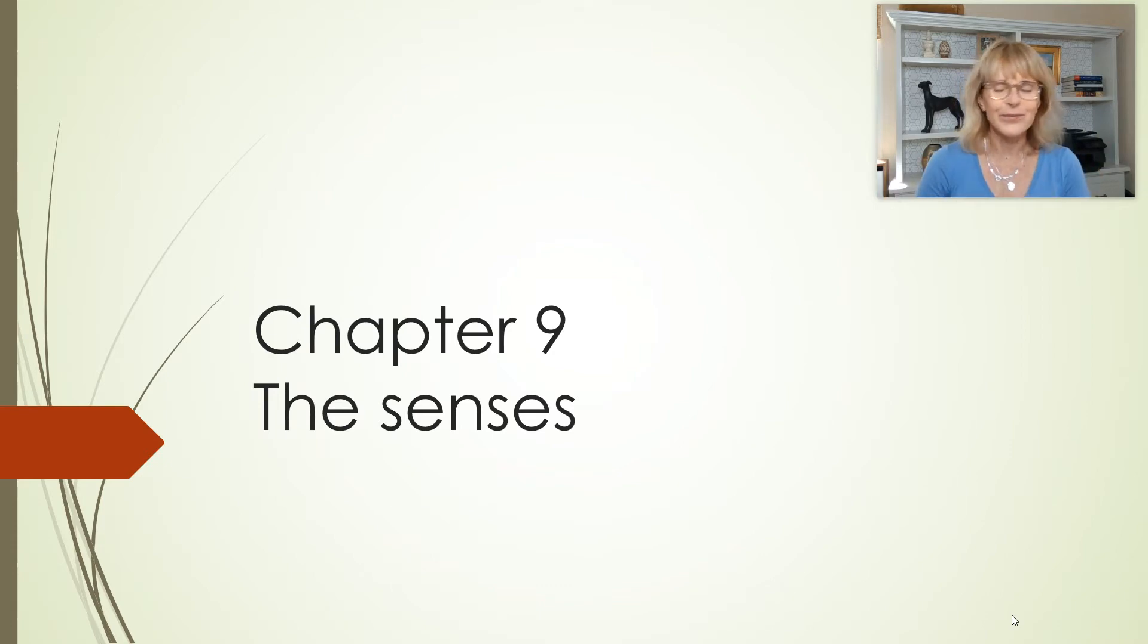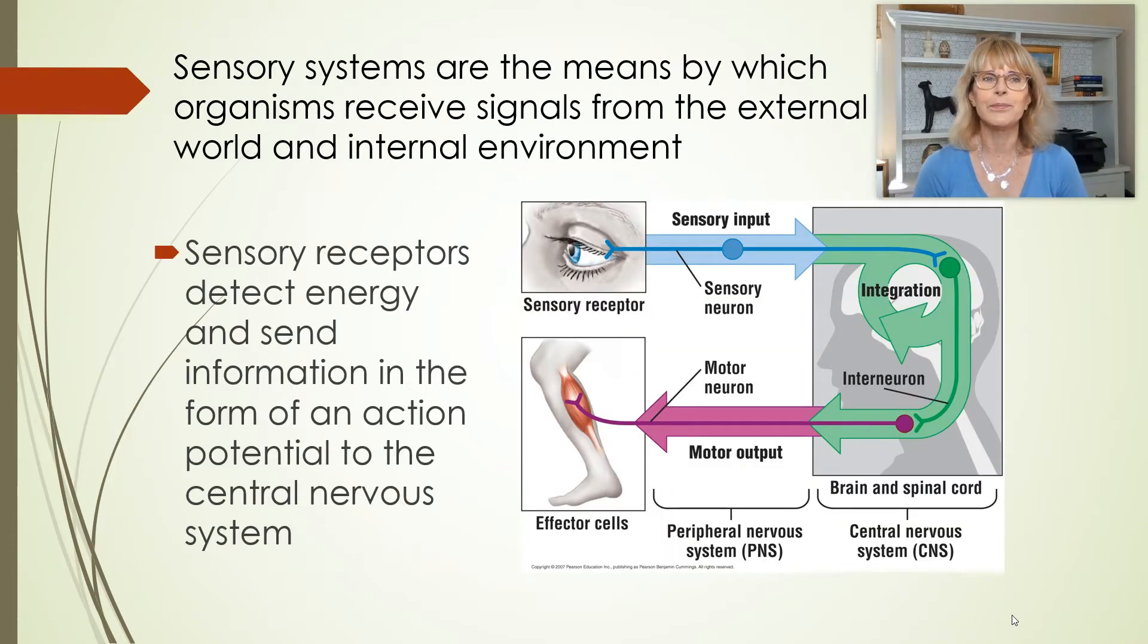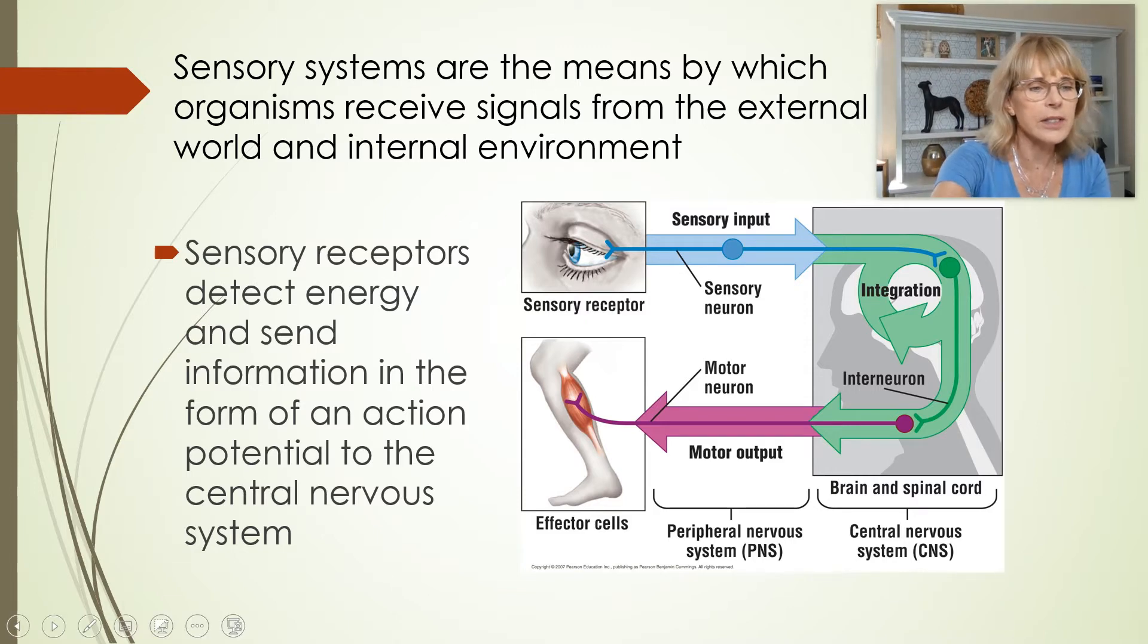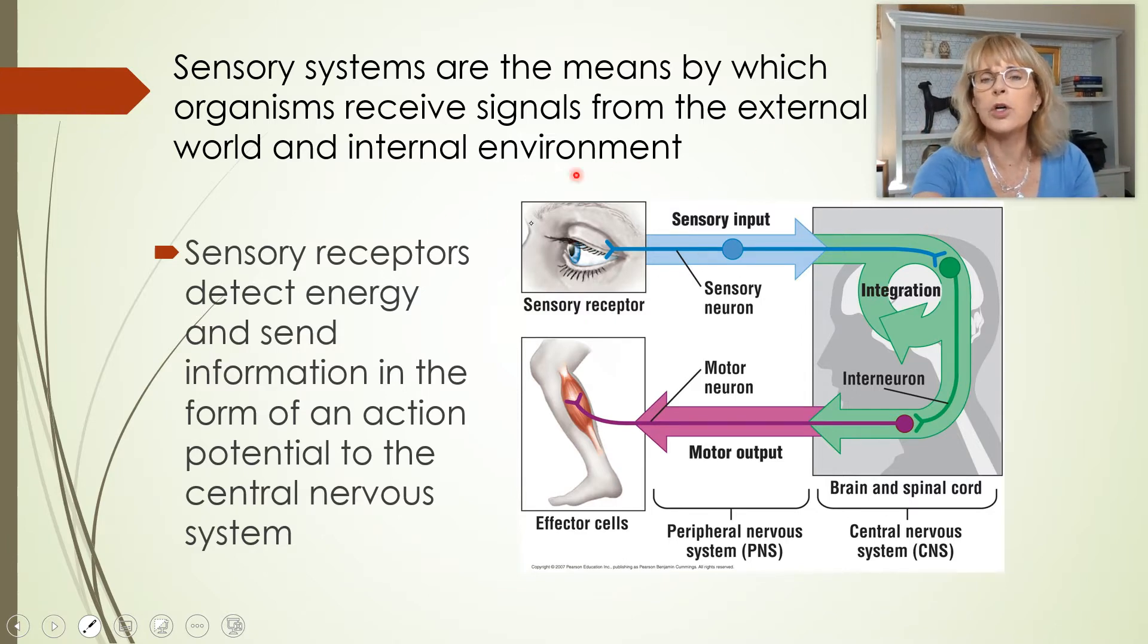Let me remind you that the nervous system in general is divided up into three things. One of them is sensory, which is information going into the central nervous system. The job of the central nervous system is integration - understanding what is being experienced and deciding what action should be taken as a result. And then it is motor. So now we're drilling down into sensory. We're going to be talking about individual sensory receptors.